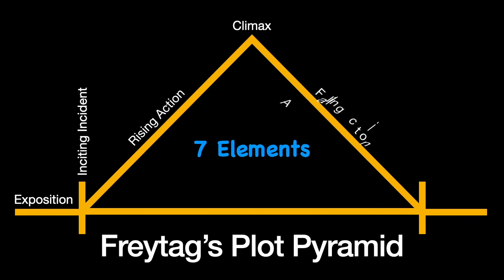Then we have falling action — the action that occurs after the climax. I want to correct something here: this plot pyramid is always drawn in a symmetrical shape, but the climax almost never comes in the middle of a story. Climax is usually much closer to the end, so we might see a longer slope for rising action and then a very steep drop-off for falling action. A story doesn't end until we have the resolution, which is the action that ends the central conflict. Without that, we have a to-be-continued story.